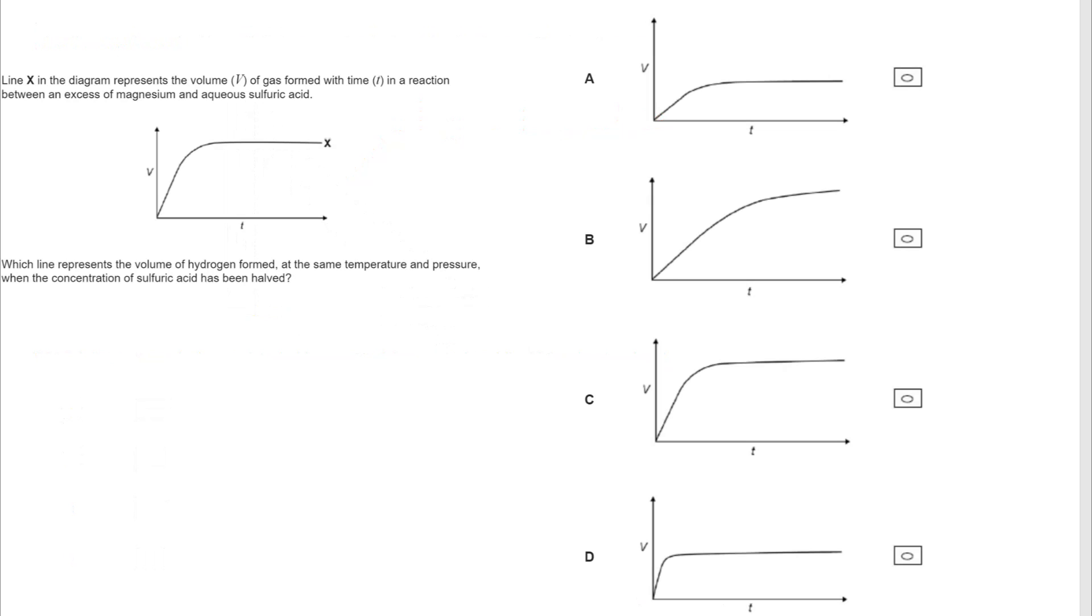And we've got some good, old-fashioned rates of reaction here. So these graphs you'll be familiar with, potentially, also from GCSE. If we look at the volume that's being produced in the first example, it's going to slow down and then stop reacting when we run out of the sulfuric acid, because the magnesium is in excess.